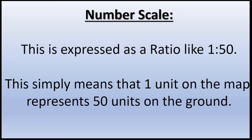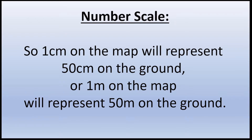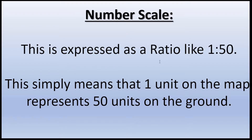The number scale is expressed as a ratio like 1 to 50. This simply means that one unit on the map represents 50 units on the ground, or in real life. So if I measure one centimeter on my map, that will represent 50 centimeters in the real world. Or if I measure one meter on the map, that will represent 50 meters on the ground. That's our number scale, expressed as a ratio.